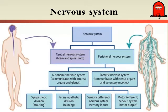The Autonomic Nervous System is divided into two divisions: the Sympathetic Division and the Parasympathetic Division. The Sympathetic Division is regarded as the arousal part of the Autonomic Nervous System, while the Parasympathetic Division represents the calming part of the Autonomic Nervous System.